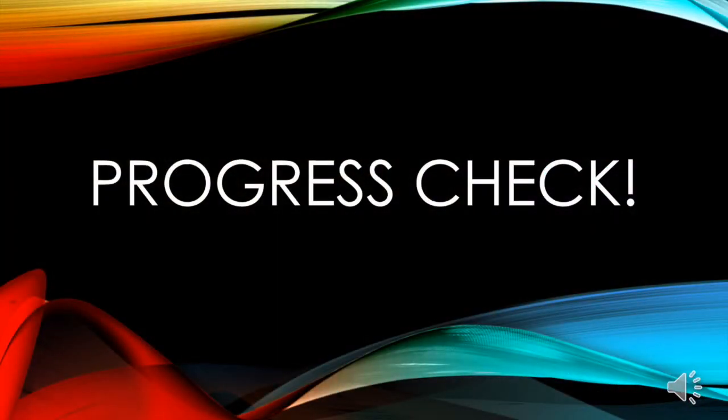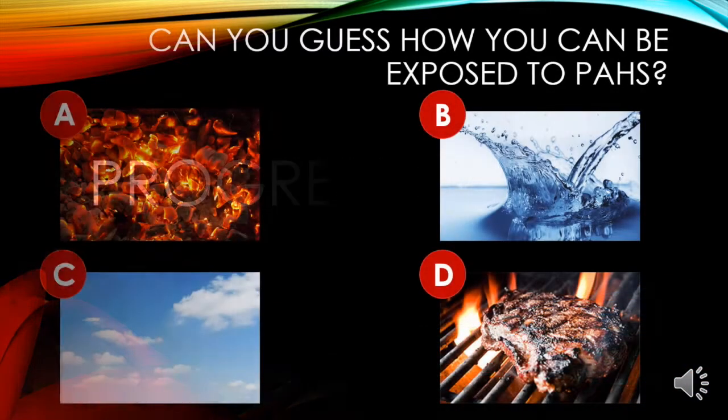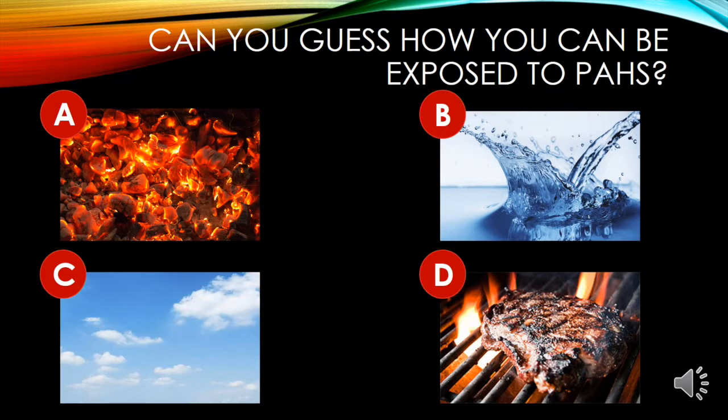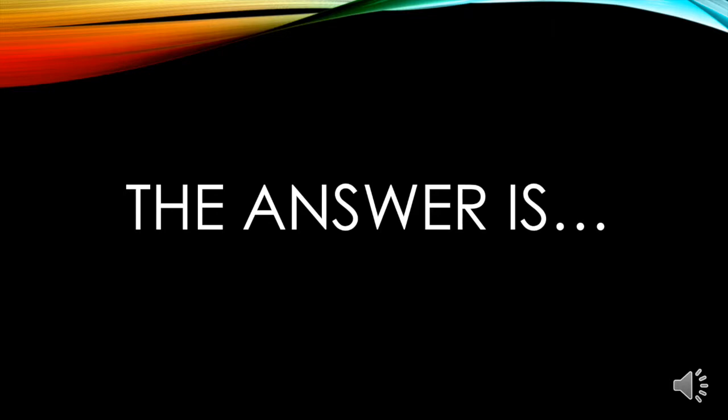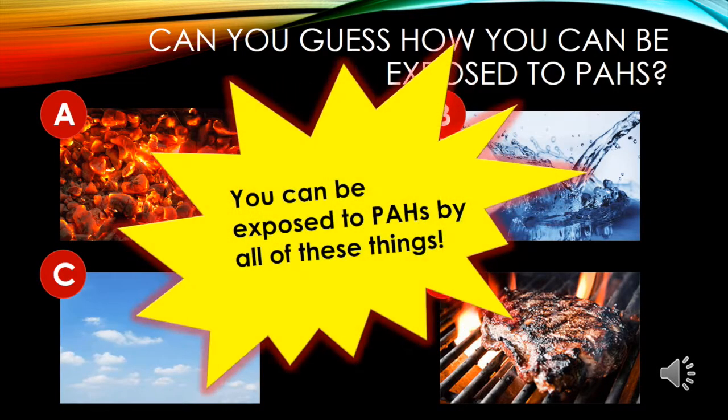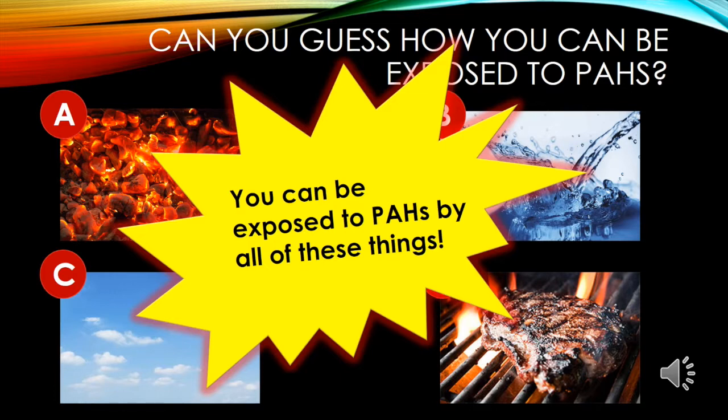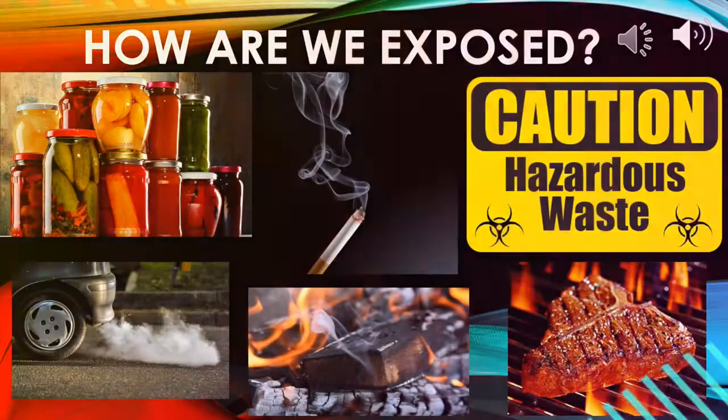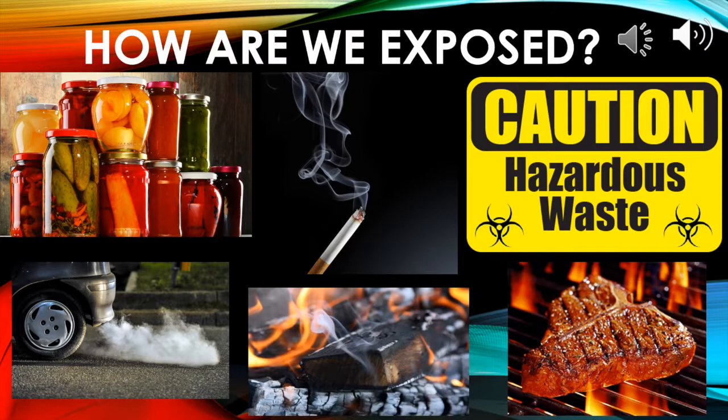We have another progress check for you today. Can you guess how you can be exposed to PAHs? Take a second and think about it. And the answer is you can actually be exposed to PAHs by all of these things. Burning coal, contaminants in water and air, and even char-broiled food. Other ways you can be exposed to PAHs include pickled food, cigarette smoke, coming into contact with hazardous waste areas, car exhaust, wood smoke, and charred food.